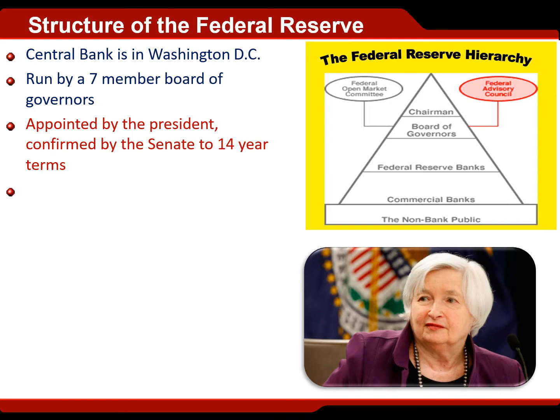The governors get 14-year terms in office. The idea is that if you have a 14-year term, it doesn't matter if the president likes you or not — when your term is up, that president is already going to be out, because the longest any president can serve is only eight years. This is a really clever way to make sure that the Fed maintains its role as an independent watchdog over the banking system and the defenders of monetary policy.